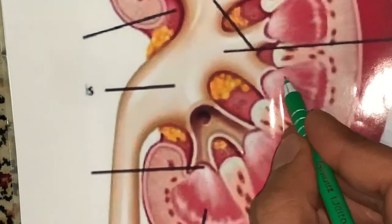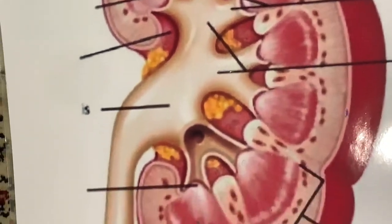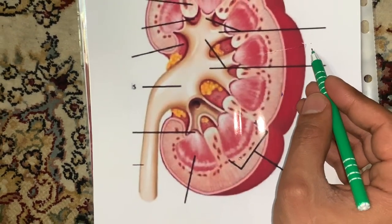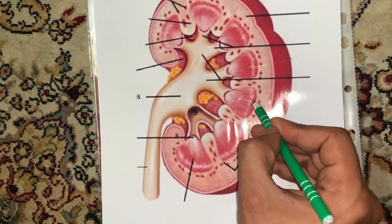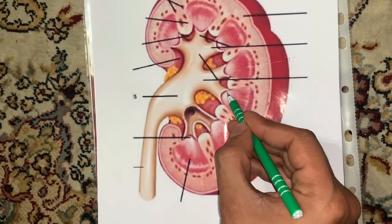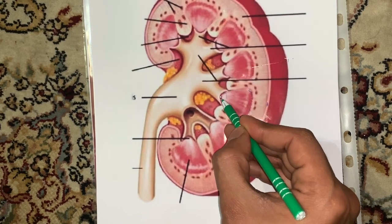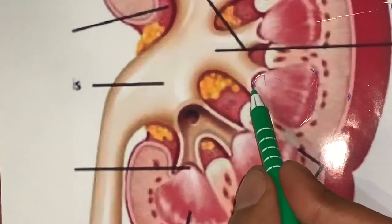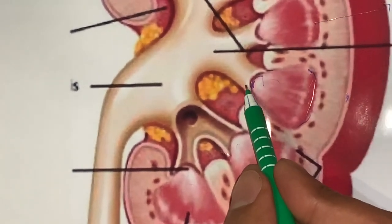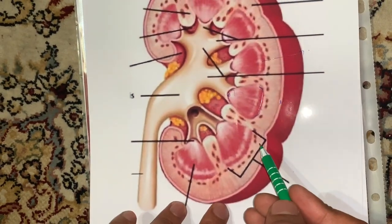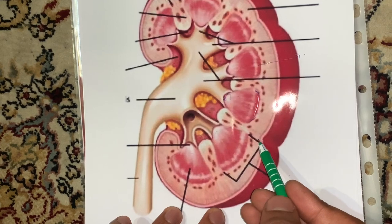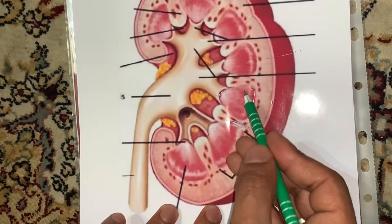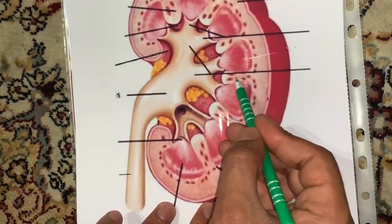Into the medulla there are present medullary pyramids. There are 10 to 15 medullary pyramids in the medulla. Each medullary pyramid consists of a base and a tip. The tip is also known as the papilla, and it has a shape like a nipple. Some projections extend from the cortex into the medulla.